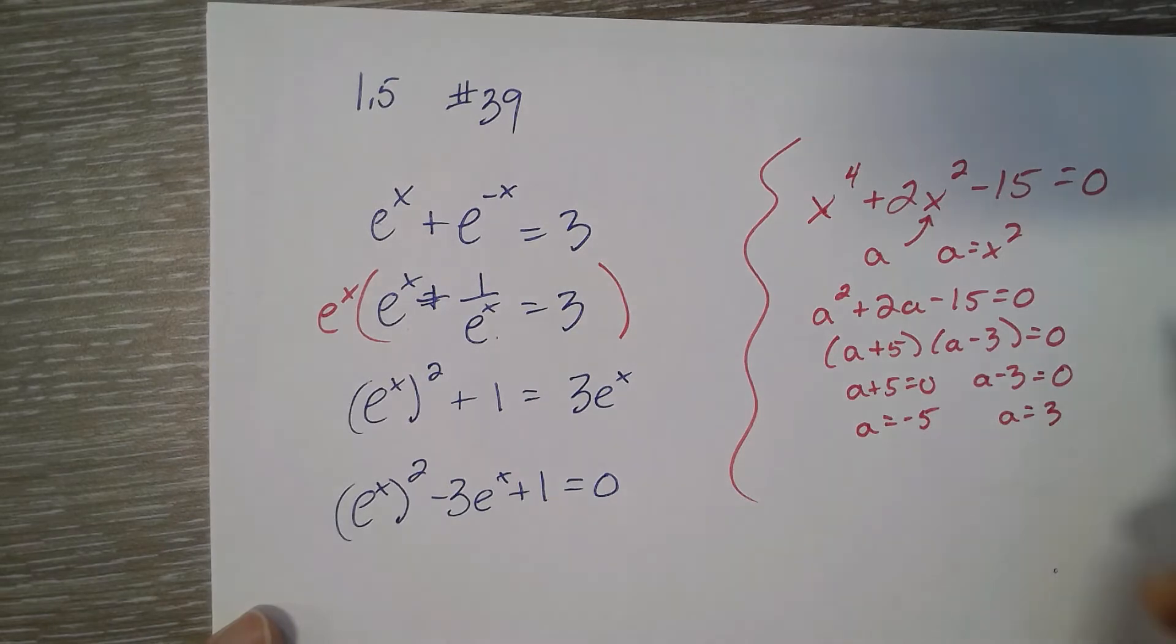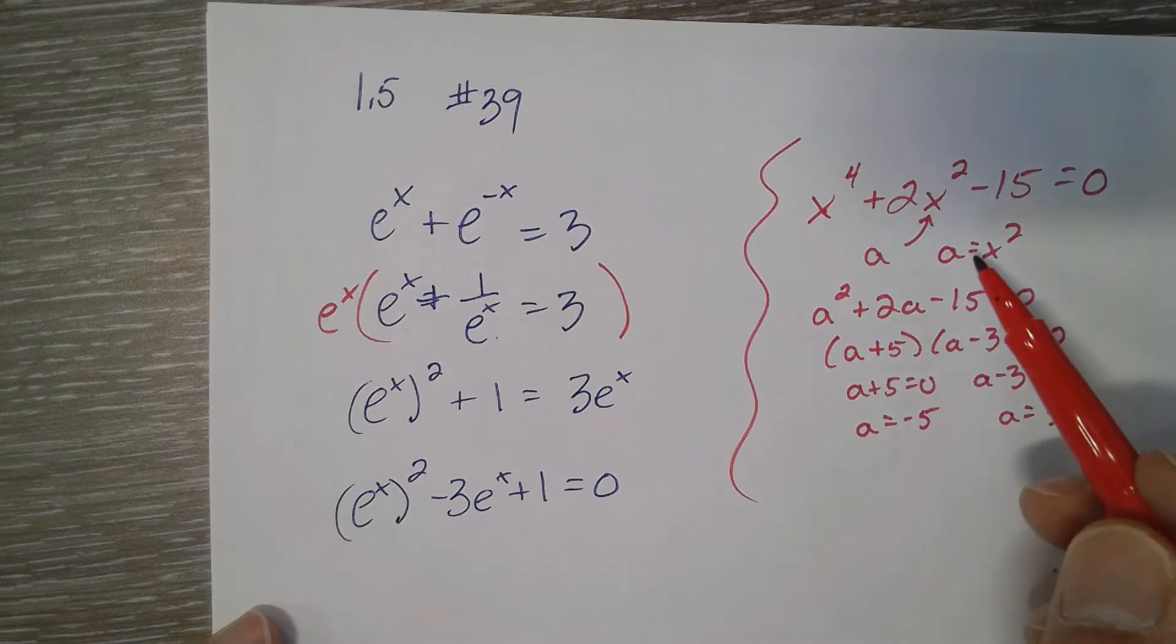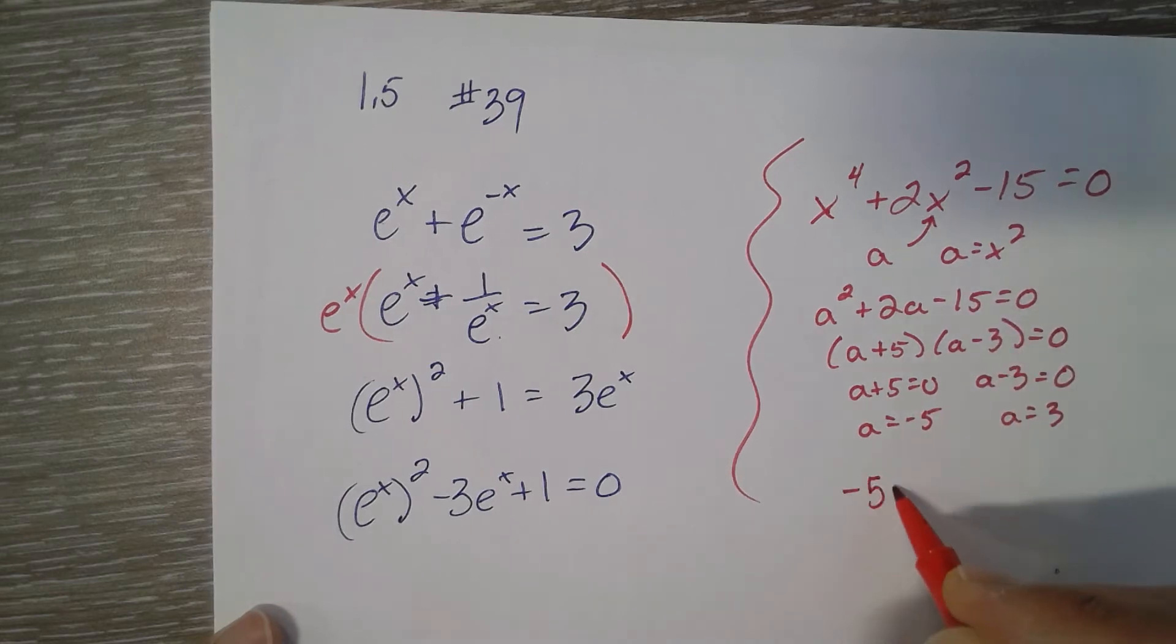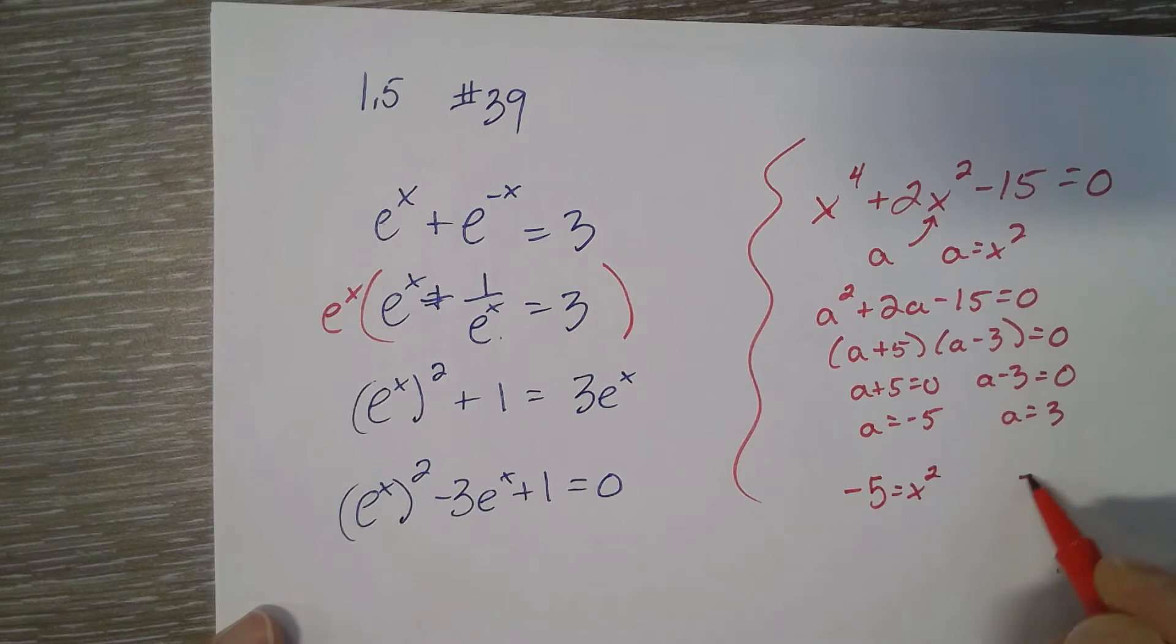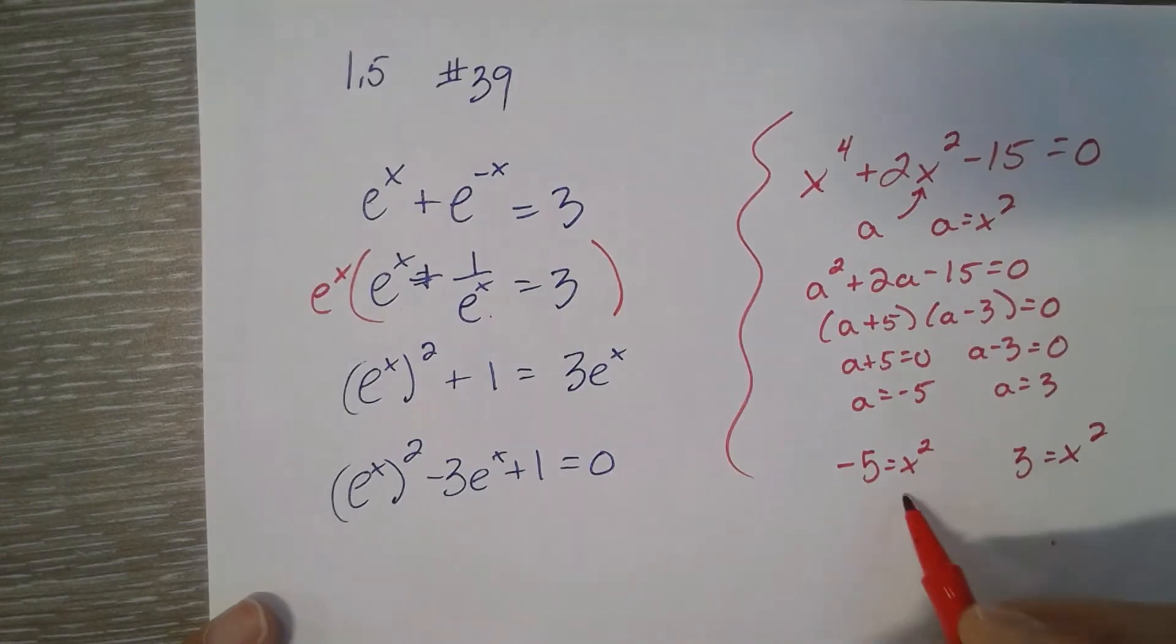So negative 5 and 3. Those are my two values for a. We're not trying to solve for a. We're trying to solve for x. So we have to back substitute what we got for a right there. So a is negative 5 and a is 3. So negative 5 equals x squared. And 3 equals x squared. Square root each side.